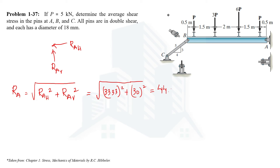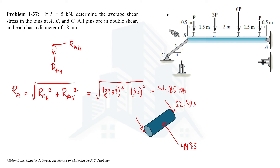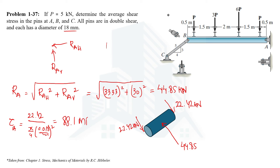Since all pins are in double shear, the force is divided into two equal parts. At pin A, the resultant force of 44.85 kN is resisted by two shear planes, each carrying 22.42 kN. The average shear stress at A = shear force / shear area = 22,420 N / (π/4 × (0.018 m)²). The diameter of each pin is 18 mm. Calculating gives a shear stress at pin A of 88.1 MPa.